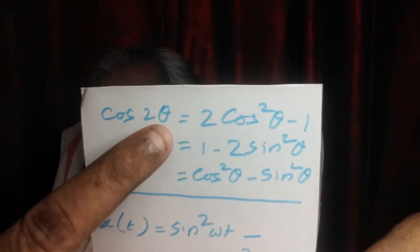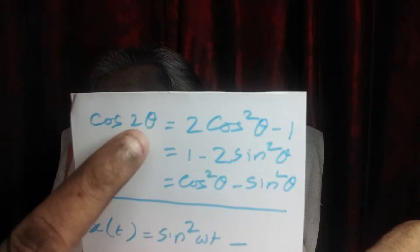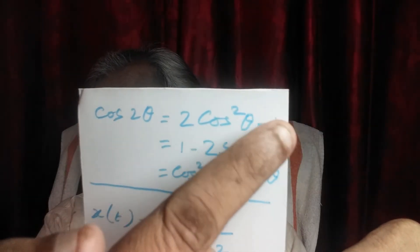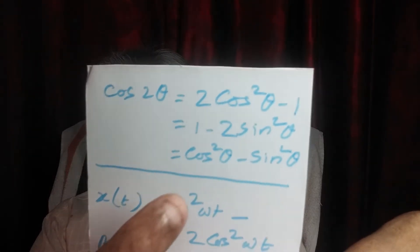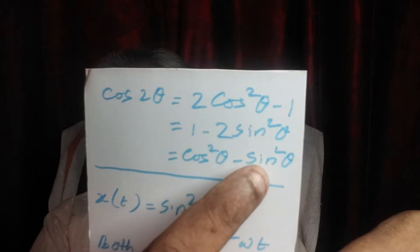cos(2θ) = 2cos²θ − 1, or 1 − 2sin²θ, or cos²θ − sin²θ. So wherever you see cos²θ or sin²θ, please keep it in mind that you can transform it into sin or cos with double the angle. sin²θ or cos²θ can be converted to a function containing cos(2θ).